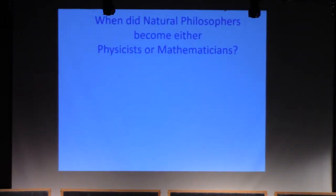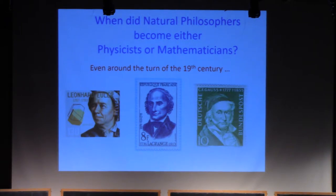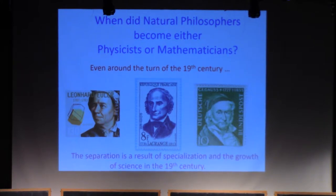Even around the turn of the 19th century, if you think about figures like Euler, Lagrange, and Gauss, they made major contributions to both math and physics, and they probably would have considered themselves natural philosophers. But sometime in the middle of the 19th century, that situation clearly changed.